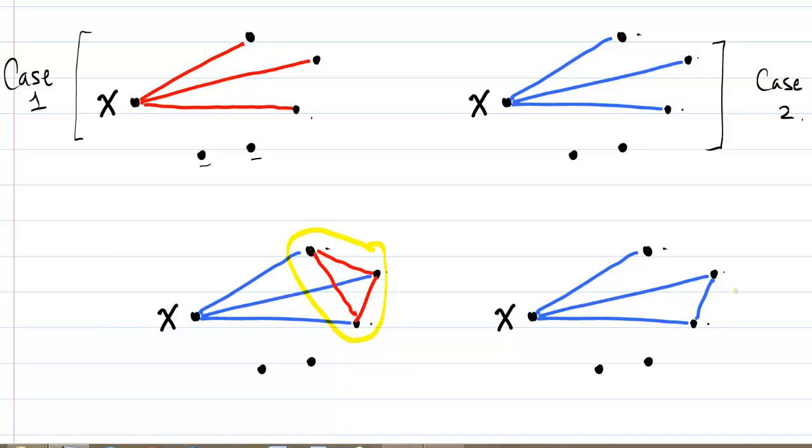If they're not all enemies with each other, there has to be some pair who are friends with each other. And in this case, we have a group of three who are all friends with each other.